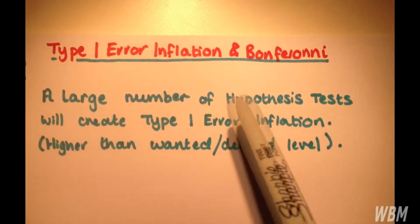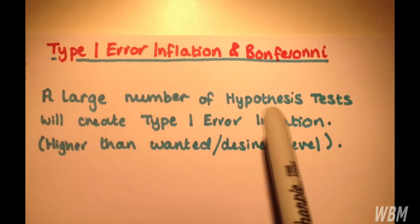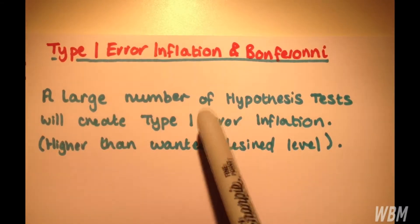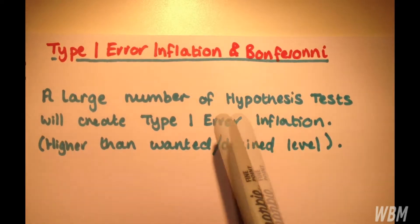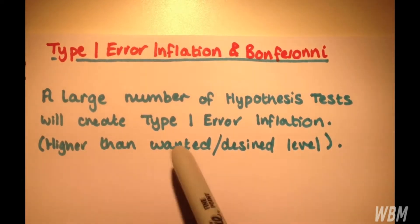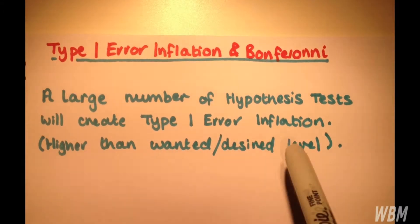A large number of hypothesis tests will create type 1 error inflation. When we have type 1 error inflation, we have a higher than wanted or desired error level.